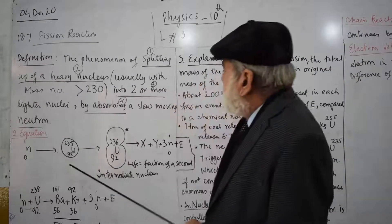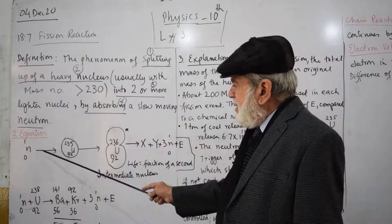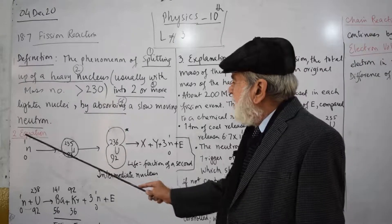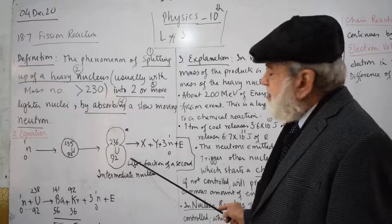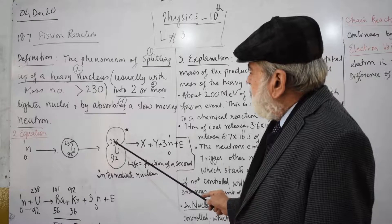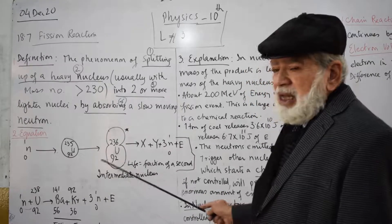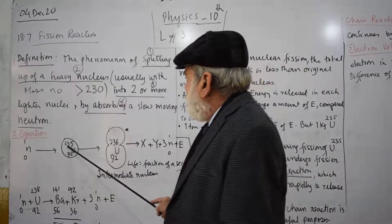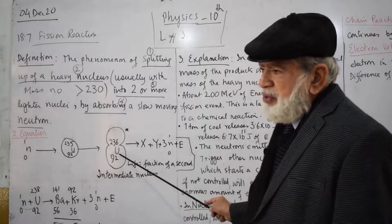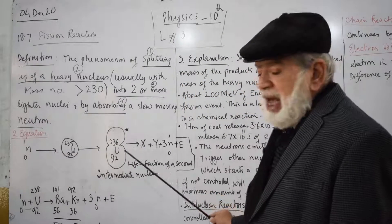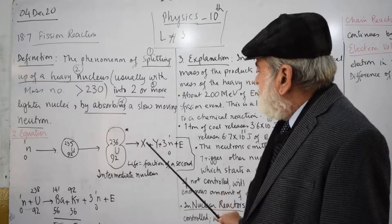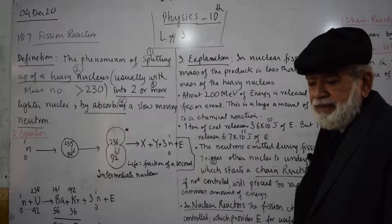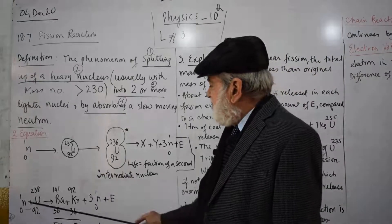Now we go over the equation. Uranium-235 absorbs a neutron, comes into a stage of Uranium-236 which is an intermediate nucleus, and this lasts for a fraction of a second. So Uranium-235 absorbs a neutron, becomes Uranium-236, and this splits up into daughter nuclei X and Y, and three neutrons are released plus energy.